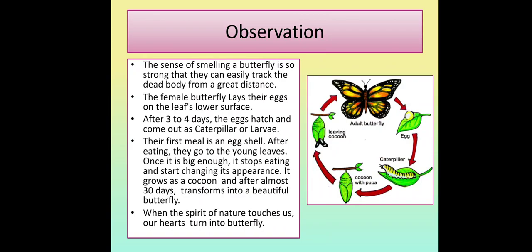The sense of smell in a butterfly is so strong that they can easily track things from a great distance. The female butterfly lays their eggs on the lower surface of leaves. After three to four days, the eggs hatch and come out as a caterpillar or larvae. Their first meal is the egg shell. After eating, they move to the young leaves. Once big enough, the caterpillar stops eating and starts changing its appearance — it grows into a cocoon, and after almost 30 days transforms into a beautiful adult butterfly.